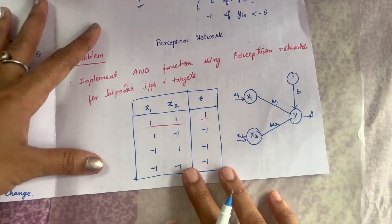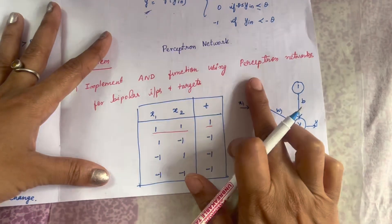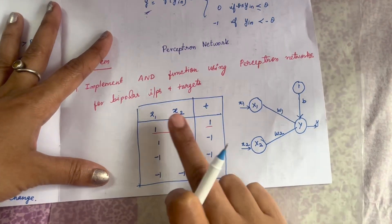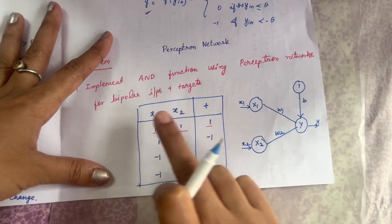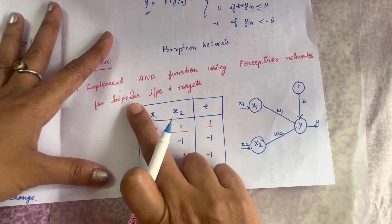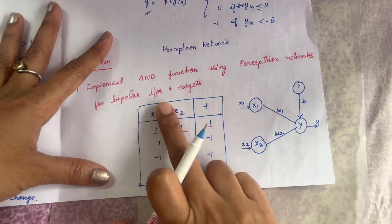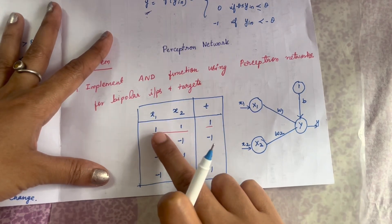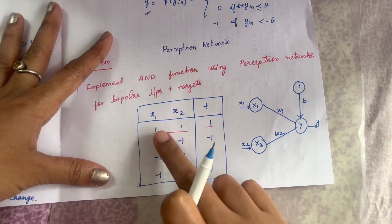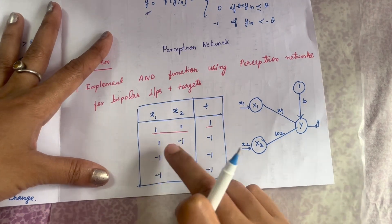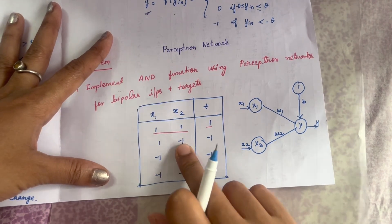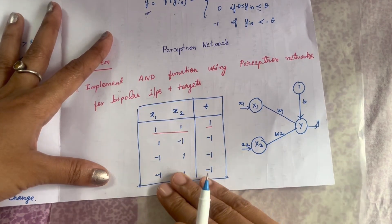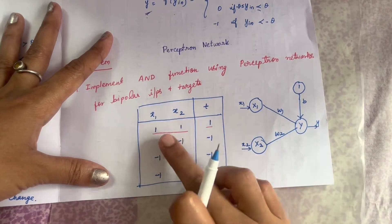Now let us get into this video — implementing the AND function using Perceptron Network. The AND function has two inputs x1 and x2, and a target t. Here they specifically mention to use only bipolar inputs, meaning instead of 1s and 0s, the inputs will be 1 and minus 1. So the input combinations are: (1,1), (1,-1), (-1,1), and (-1,-1). The target value is 1 only when both inputs are 1; otherwise the target values are minus 1, minus 1, and minus 1. This is the truth table for the AND function.